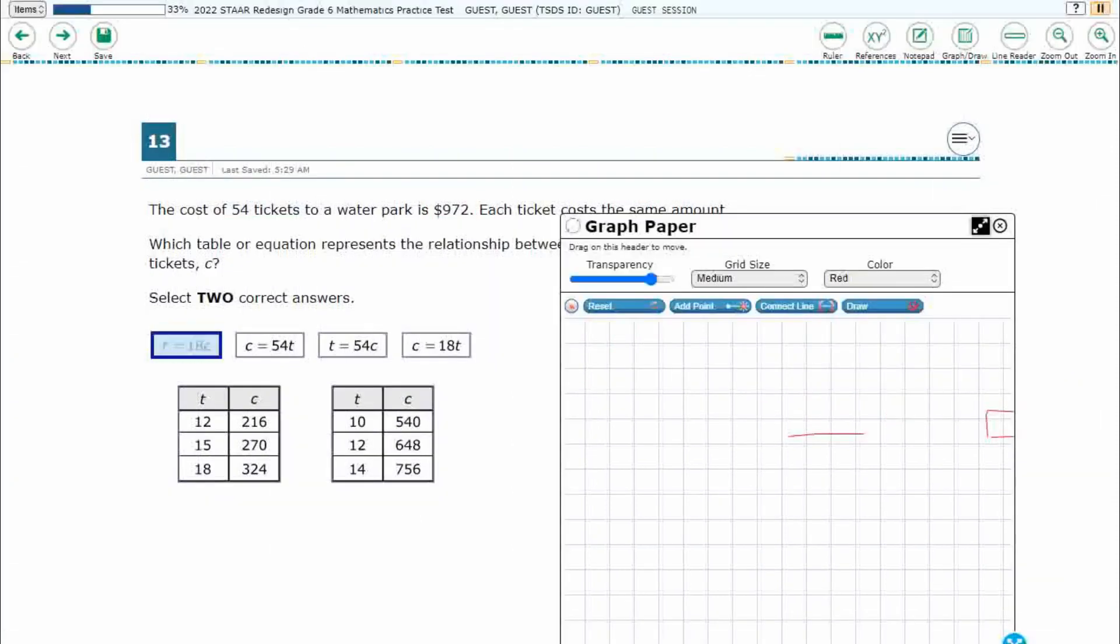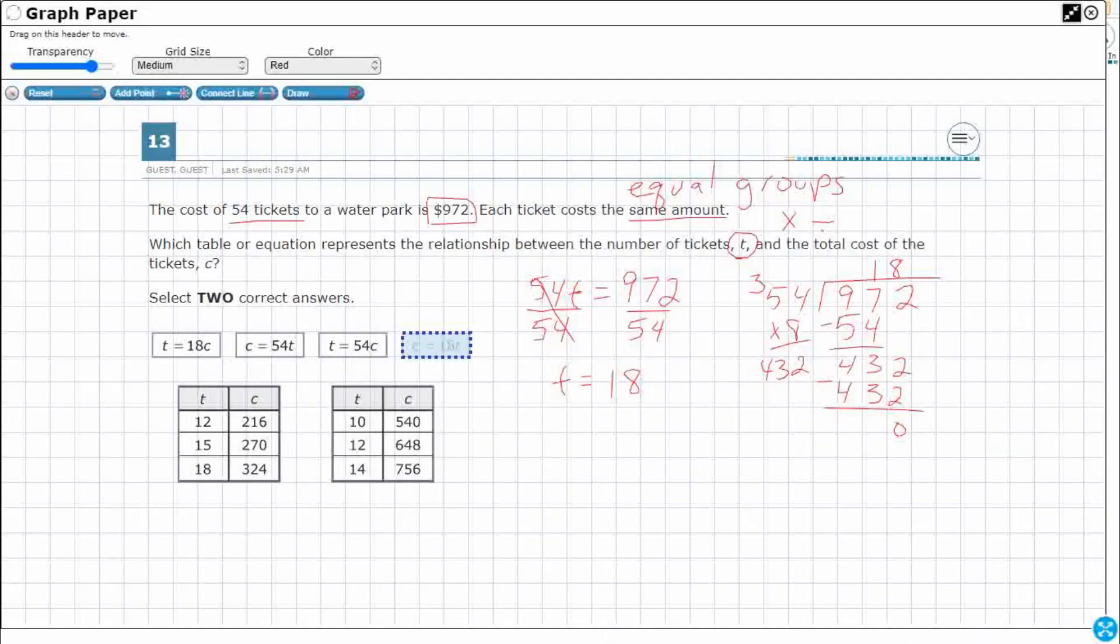You know what, though? That's not really going to work, is it? T equals 18C, because I want my cost is going to equal 18 times the ticket. So we have to be careful with that. My ticket equals 18, but look at that C right there. C is going to be my total cost. So my total cost is going to be 18 bucks per ticket. Watch out. I've got my 18, but I almost selected the incorrect answer.